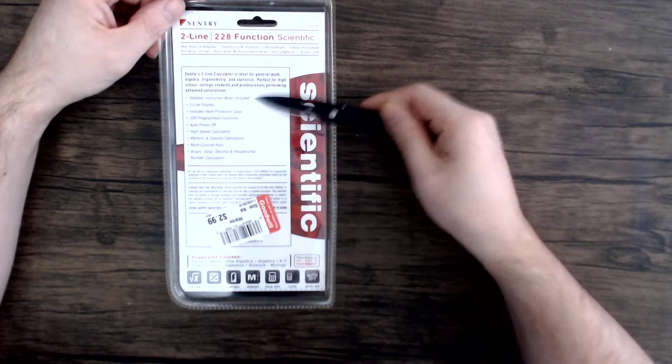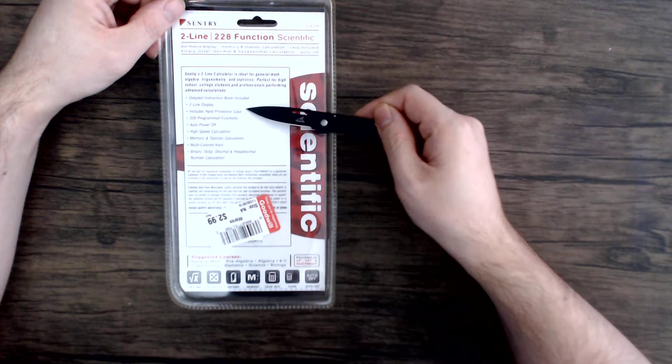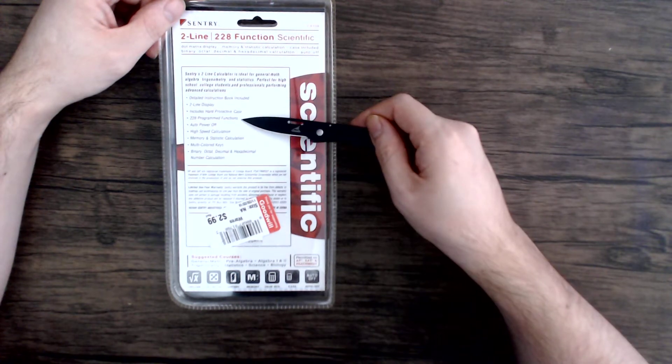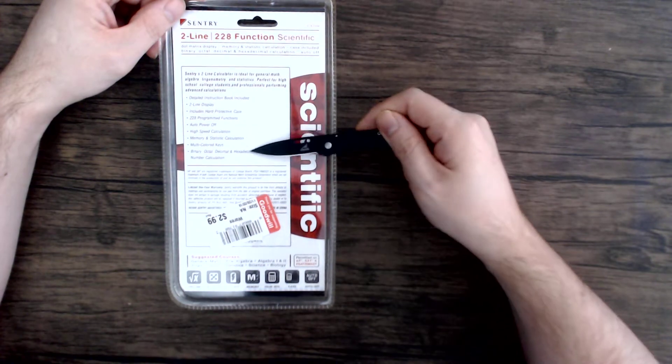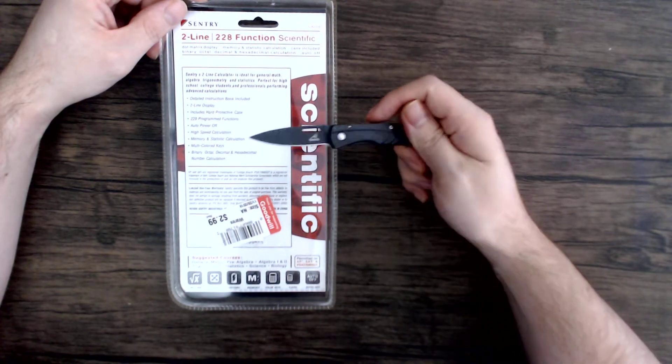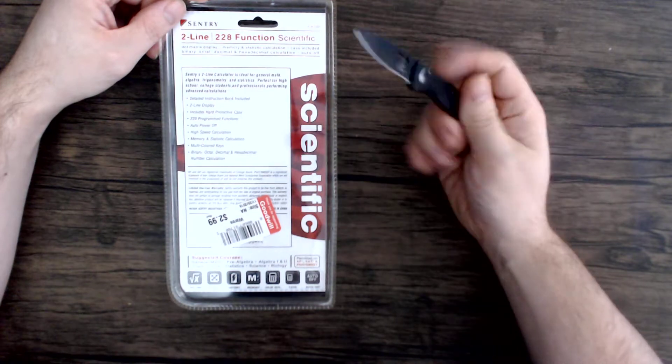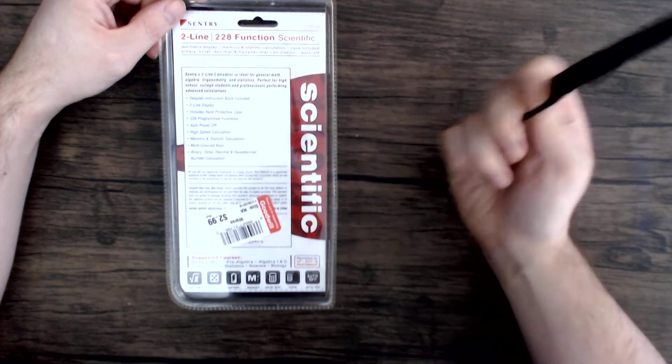So it comes with a detailed instruction book, two-line display, a hard protective case, 228 program functions, auto-off, high-speed calculations, memory and statistics calculations, multi-colored keys, and a limited one-year warranty.